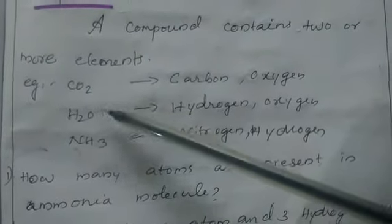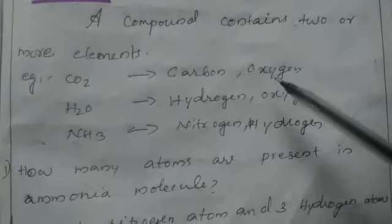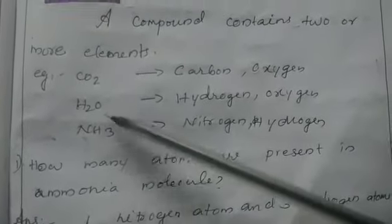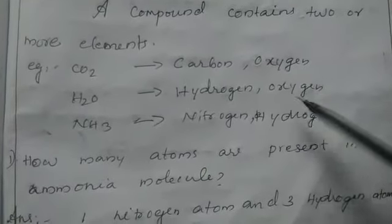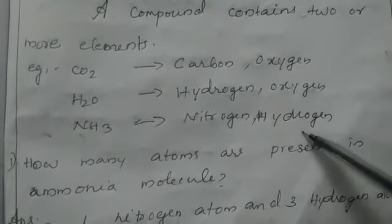Now we can see how we can write or represent the total number of atoms in a compound. Carbon dioxide contains carbon and oxygen. Water contains hydrogen and oxygen. Then ammonia contains nitrogen and hydrogen.